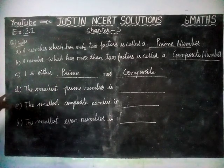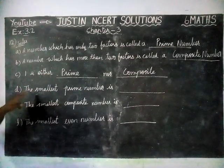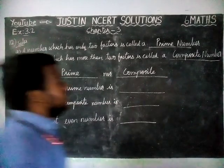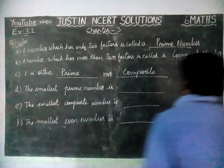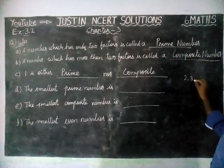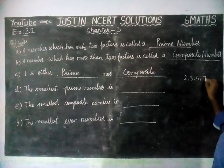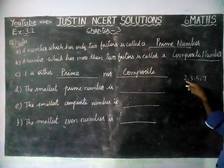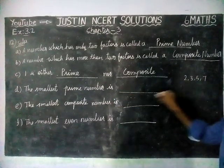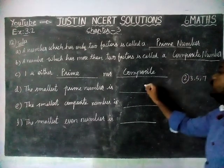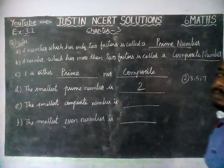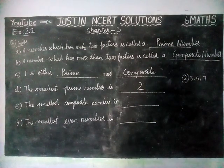Next, option D: the smallest prime number is — we write the prime numbers: 2, 3, 5, 7. The starting number is 2, so the smallest prime number is 2.